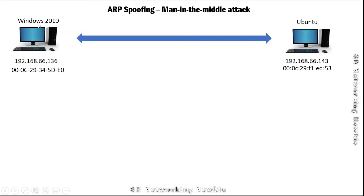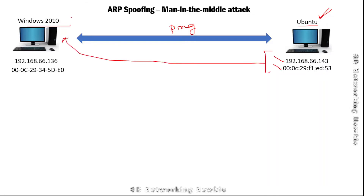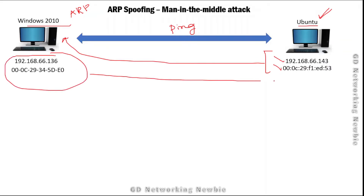For the demonstration in this video, I'll use two machines — one is Windows 10 and the other is Ubuntu. Let's say these two machines are communicating with each other, exchanging ping request and reply messages. In Windows 10, the ARP table will contain Ubuntu's IP address and MAC address. ARP stands for Address Resolution Protocol. Ubuntu will also maintain information about the Windows machine.